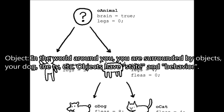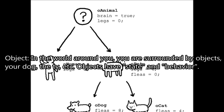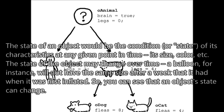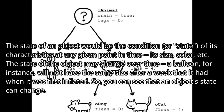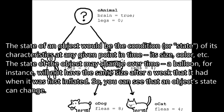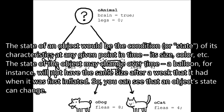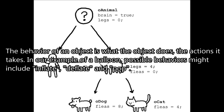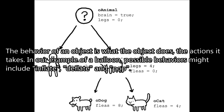Object — in the world around you, you are surrounded by objects: your dog, the TV, etc. Objects have state and behavior. The state of an object is the condition of its characteristics at any given point in time — its size, color, etc. The state may change over time; a balloon, for instance, will not have the same size after a week that it had when first inflated. The behavior of an object is what the object does — the actions it takes. For a balloon, possible behaviors might include inflate, deflate, and pop.